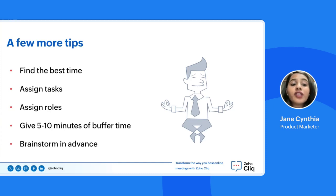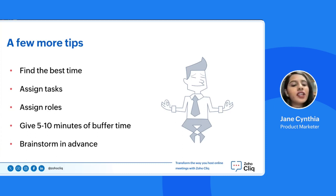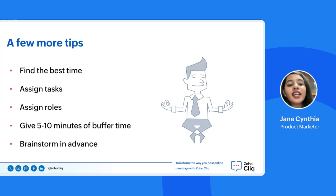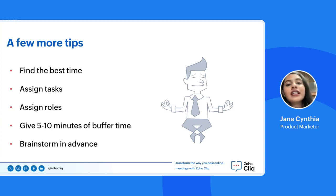Before the meeting starts, assign a small task or provide some reading for each participant to do, and send this along with your pre-planned agenda. This doesn't need to be mandatory, but rather a suggestion so participants can get into the meeting's headspace. Another tactic is to assign each member a role during the meeting — this will naturally encourage participation and provide a sense of ownership. Some roles you can assign are the note-taker, the timekeeper, and the conversation manager.